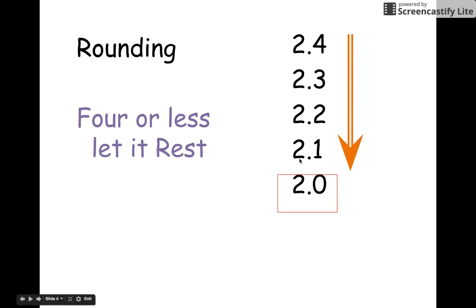So 2.1 goes back to 2, 2.2 goes back to 2, 2.3 goes back to 2, and 2.4 goes back to 2. So if it's 4 or lower, you round it down.